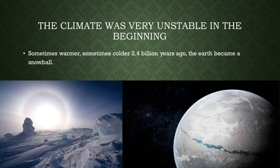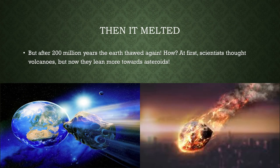You should know that the climate here on Earth for a very long time was very unstable. Sometimes it got warmer, sometimes it got colder. About 2.4 billion years ago, the Earth became basically a giant snowball. But after 200 million years it melted. At first scientists believed that volcanic activity contributed to this, but now they lean more towards asteroids and meteorites.